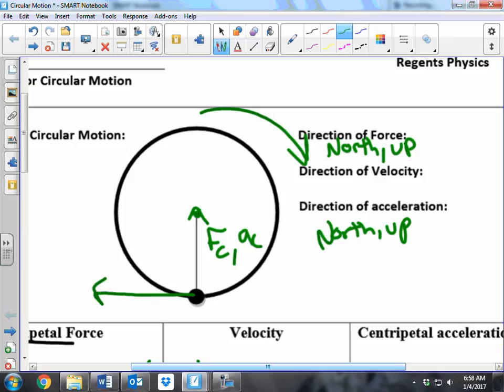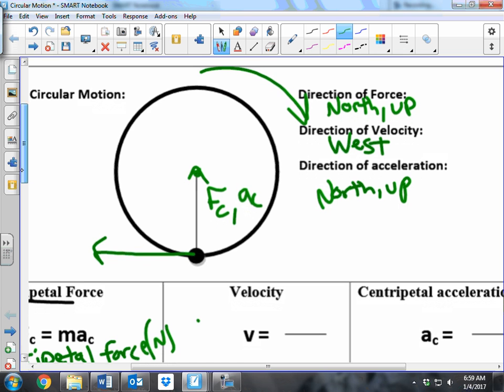So the direction of the velocity would be west because that's north and that's east. So since I'm spinning the stopper in a clockwise direction, if I were to let it go at the bottom, it would fly out towards the west. And remember, this is a horizontal circle.